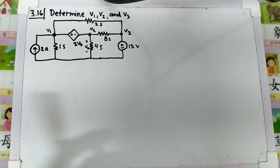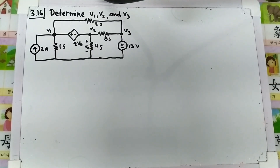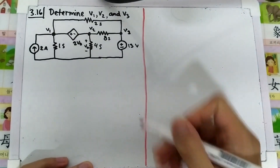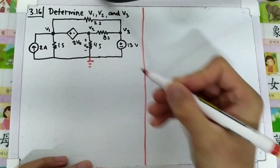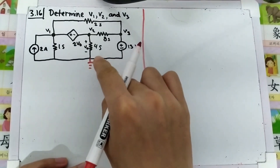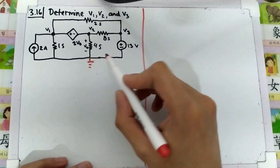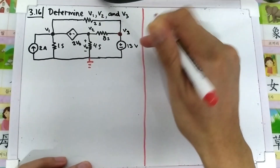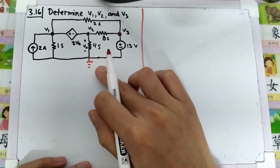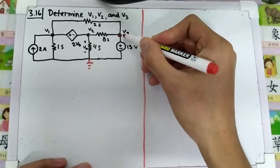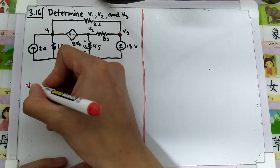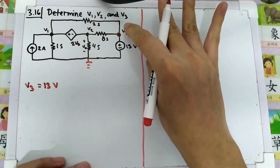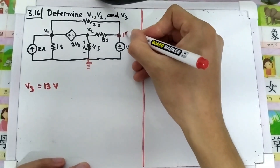This is problem 316 of Study Kubot, and we are asked to determine V1, V2, and V3 using nodal analysis. As usual, we will set this part as ground where the voltage is assumed to be zero. We have a voltage source here, and V3 is already known — the voltage between ground and the voltage source must be 13 volts. So V3 is equal to 13 volts.